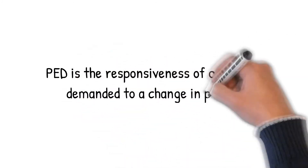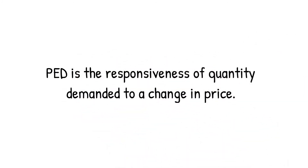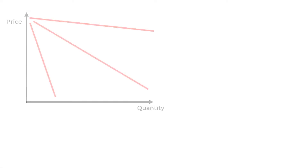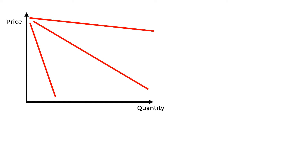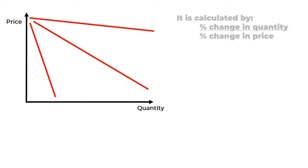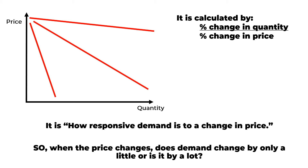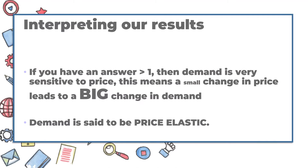PED is basically the responsiveness of quantity demanded to a change in price. We can think about price elasticity of demand as the shape of the demand curve. It is calculated by the percentage change in quantity divided by the percentage change in price — it is how responsive demand is to a change in price. When the price changes, does demand change by only a little or by a lot?